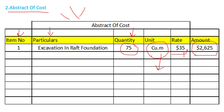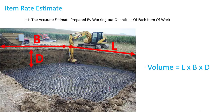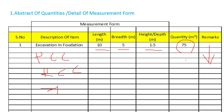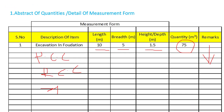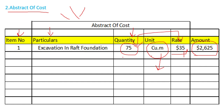This is called the unit rate. For example, if the total quantity for excavation is 75 cubic meters and the unit rate is 35, we multiply quantity by unit rate to get the total amount of $2,625. This is all about the Item Rate Estimate, in which we find out the estimate for each item. In the next tutorial, we will learn how to create the abstract of quantity sheet and abstract of cost in Excel.